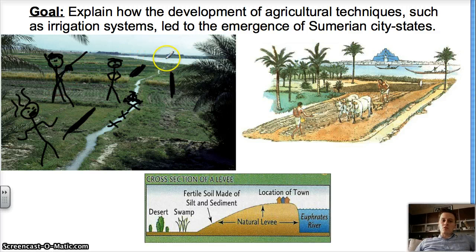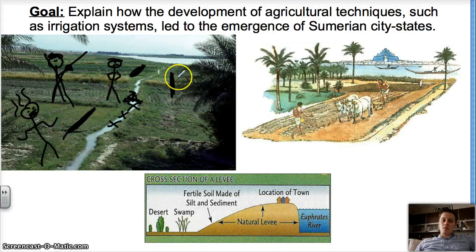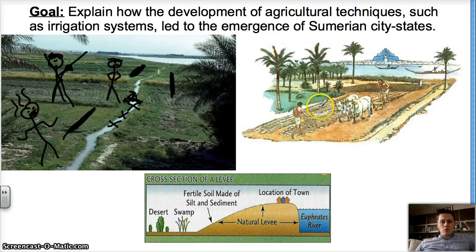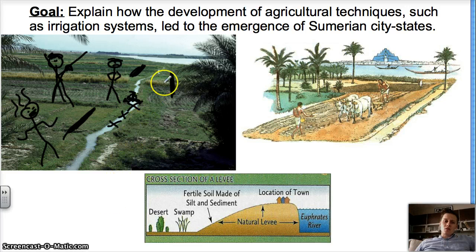They were in charge of making sure the trench stayed clean and working. That's what leads to the beginning of city-states — all these people working together to make sure the trench stays clean and continues to work. It takes a lot of work, so you don't have people living by themselves. In Neolithic settlements we saw pretty small farming communities, like 10 to 15 people. This requires a lot more.